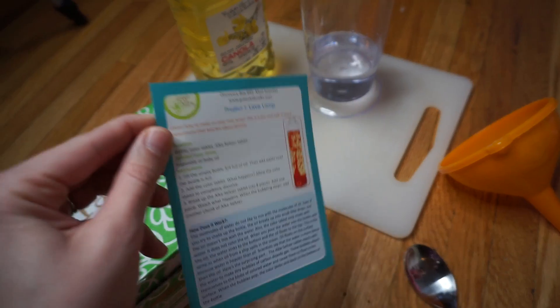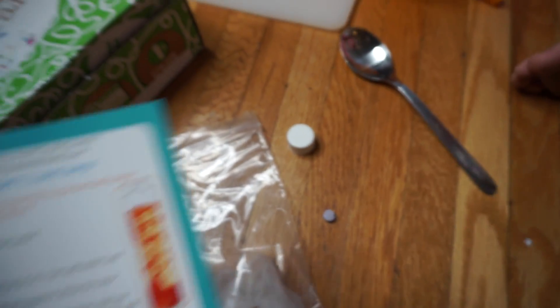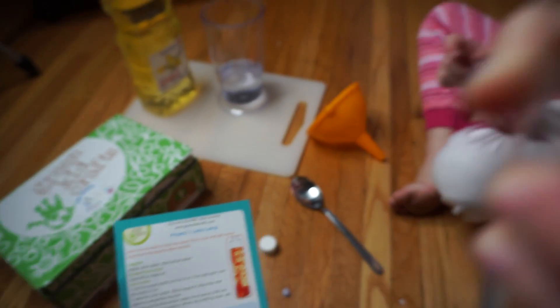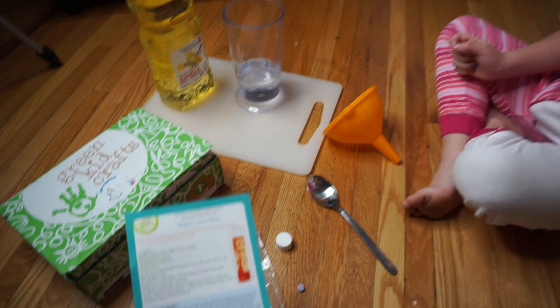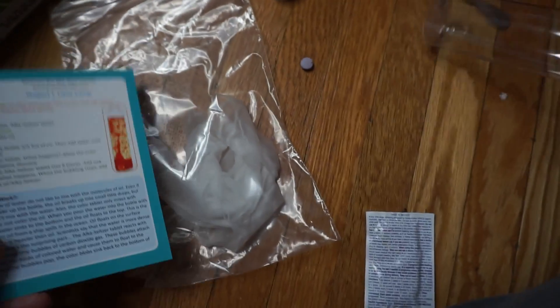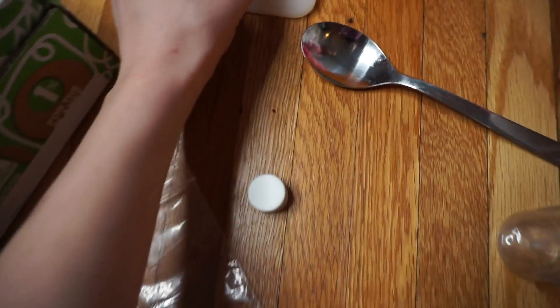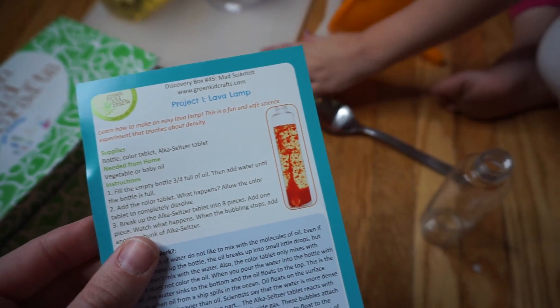We love doing science experiments. So what we're going to need from this one is the bottle. Do you see the bottle? Yes. And then we're also going to need the color tablet. Do you see the color tablet right there? So let's put our color tablet on our cutting board. We're also going to need the Alka-Seltzer tablet. Do you see the Alka-Seltzer tablets? Let's put that there.